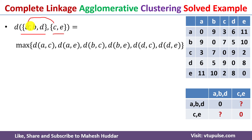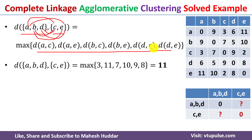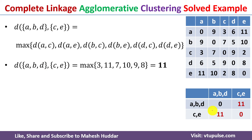The distance between cluster ABD and CE is always equivalent to the maximum distance among A-C, A-E, B-C, B-E, and D-E. Once we put in the values, the maximum distance is 11. So the distance between cluster ABD and CE is equivalent to 11. We put that value into the weight matrix and get the updated matrix.